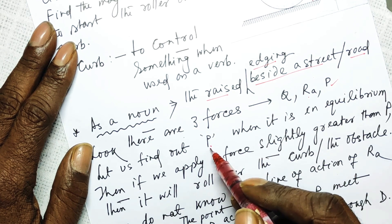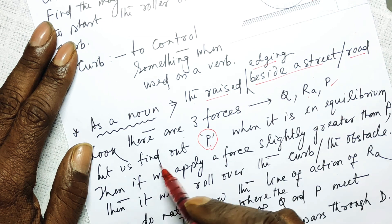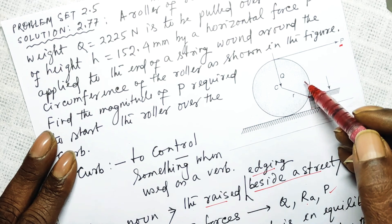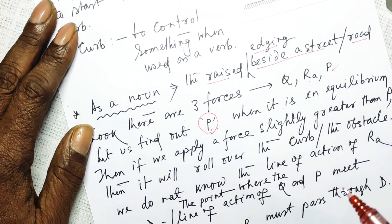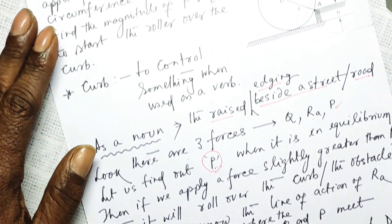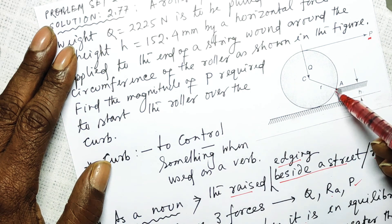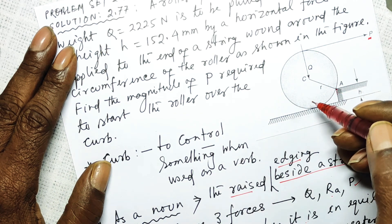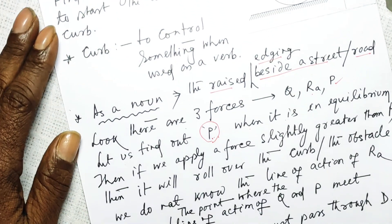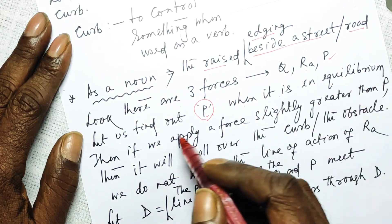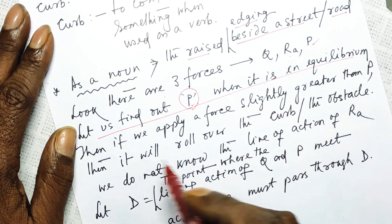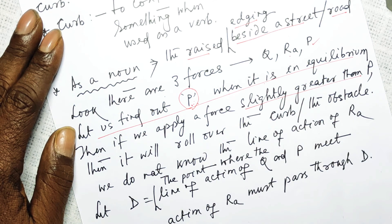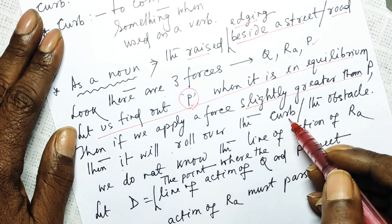Let us find out P when the system is in equilibrium. If P is slightly more than the equilibrium value, then this roller will roll over the vertical edge which is preventing the roller from climbing up. So we find P under conditions of equilibrium first; if we apply a force slightly greater than that, it will roll over the curb obstacle.